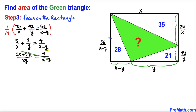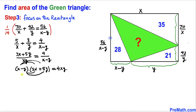Cross-multiplying gives us: (x minus y)(3x plus 5y) equals 4xy. Applying double distribution — sometimes called the rainbow method — that expands to: 3x² plus 5xy minus 3xy minus 5y² equals 4xy.